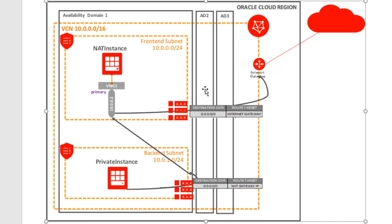We talked about NAT Gateway. Before NAT Gateway was introduced, there used to be another option, which was using a NAT instance. There is a private subnet, which is the backend subnet — the place where your database is, where your critical data is, and it's behind a firewall.